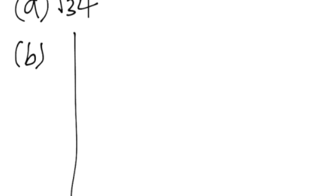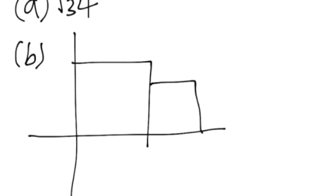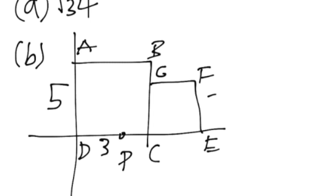Okay, so I'm going to draw it on an axis because it's easier to understand. So this is the first square, the second square. A, B, C, D, E, F, G. And P is right here. And it gives us that PD equals 3. And we know AD is 5 and FE is 3.